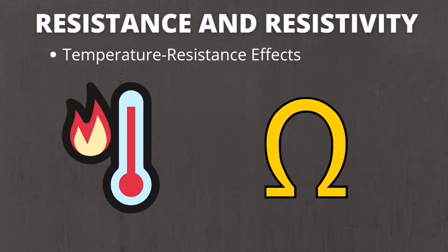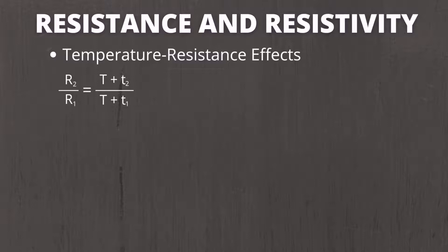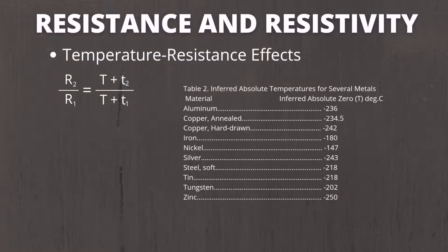The next topic is temperature resistance effects, meaning resistance varies depending on temperature. For example, a copper wire changes resistance by 42.7 percent for any 100 degree Celsius temperature change. The graph of resistance versus temperature is a straight line. The formula is: R2 divided by R1 equals constant T plus T2, divided by constant T plus T1, where R1 and R2 are resistances at respective temperatures T1 and T2. The value of constant T is given in a table of inferred absolute zero for several materials.